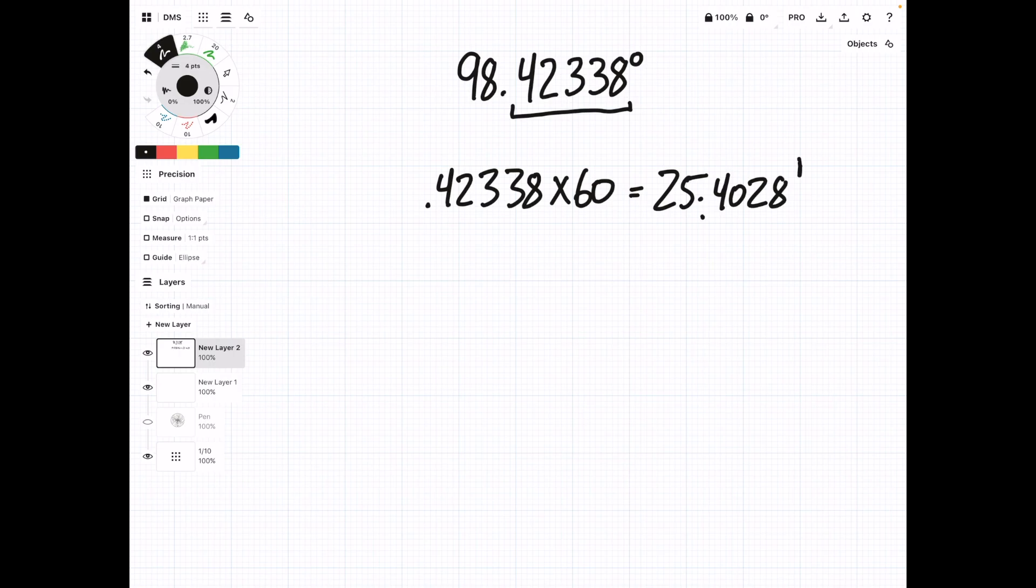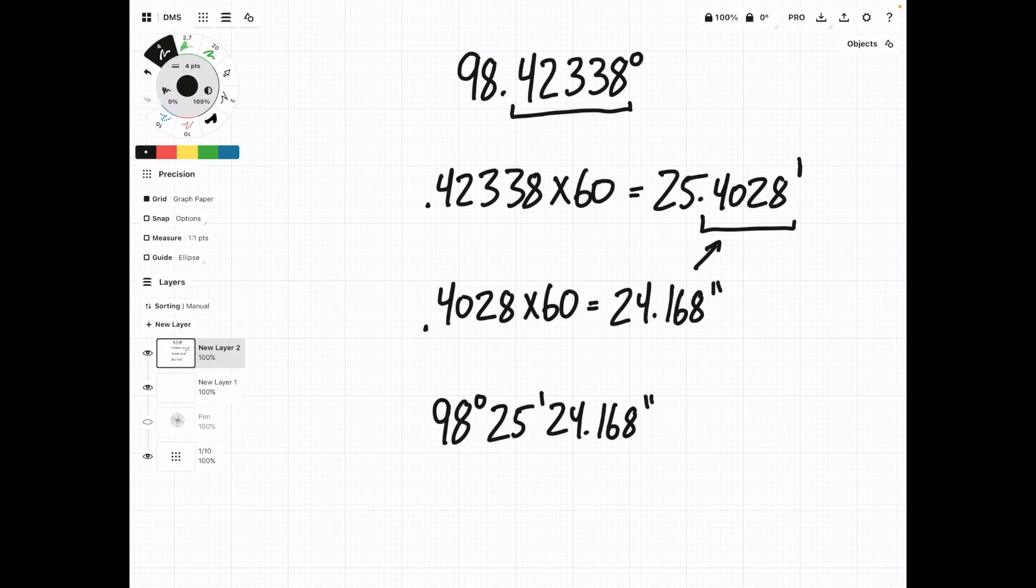Now, that we want seconds, we're going to take the new decimal and multiply this by 60. 0.4028 times 60. And this equals 24.168 seconds. So, our final answer is 98 degrees, 25 minutes, and 24.168 seconds.